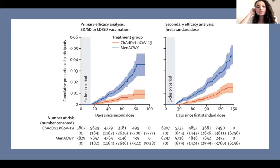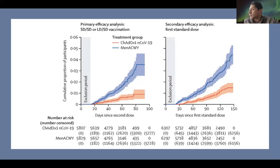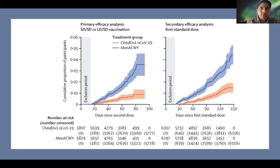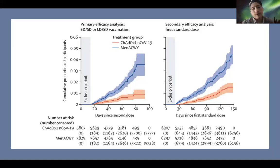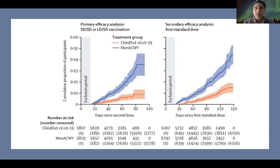¿Qué avances se han visto en cuanto a la vacunación en menores de 16 años? La de Pfizer es la que más va avanzada y genera inmunidad adecuada en niños de 10 a 16 años; es muy probable que sea la primera autorizada para vacunación en adolescentes. Para menores de 10 años, solamente hay un ensayo de AstraZeneca en desarrollo y no tenemos información de cuál será el resultado.